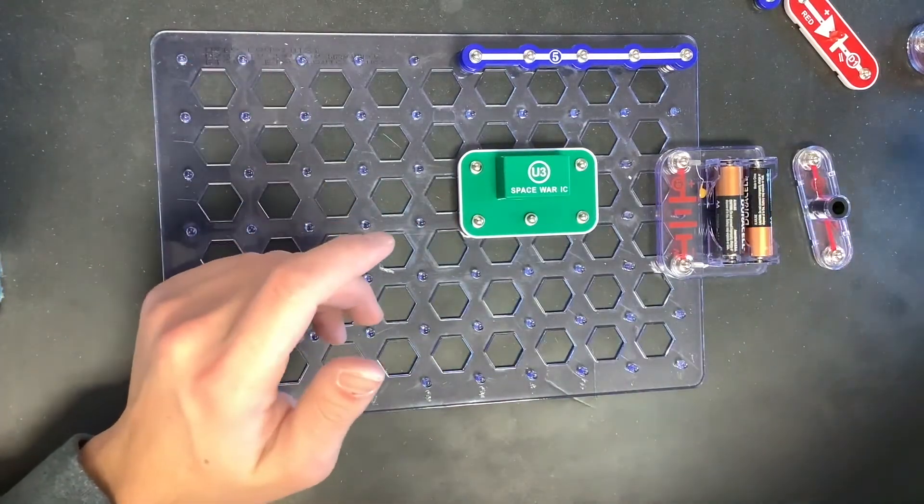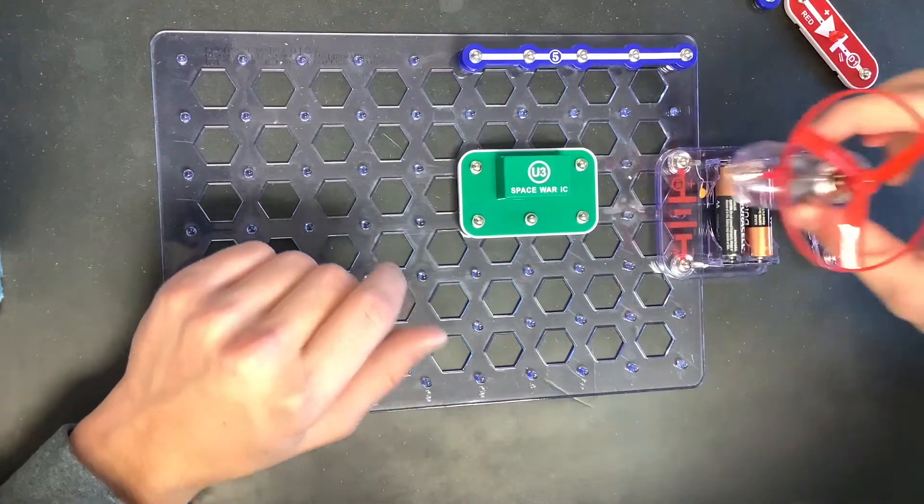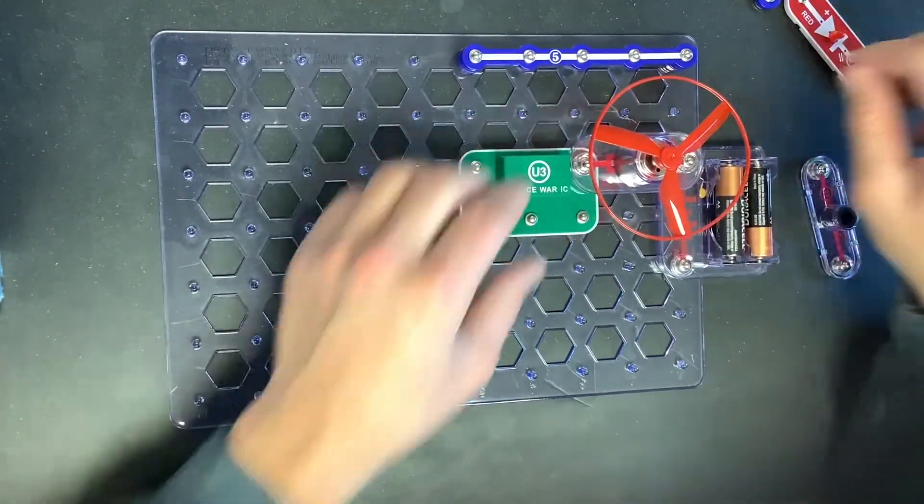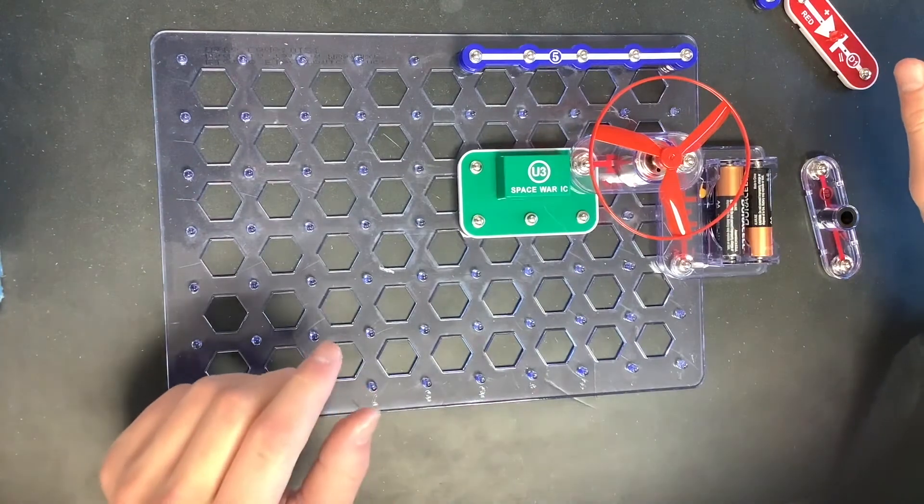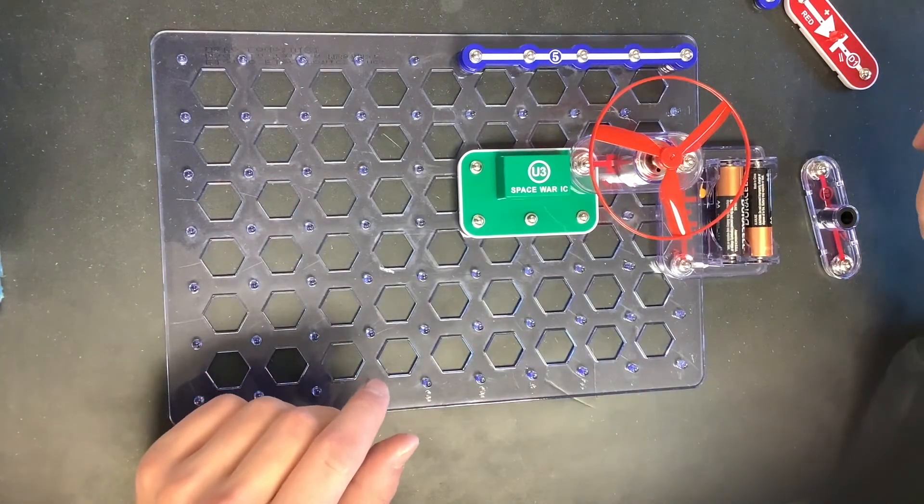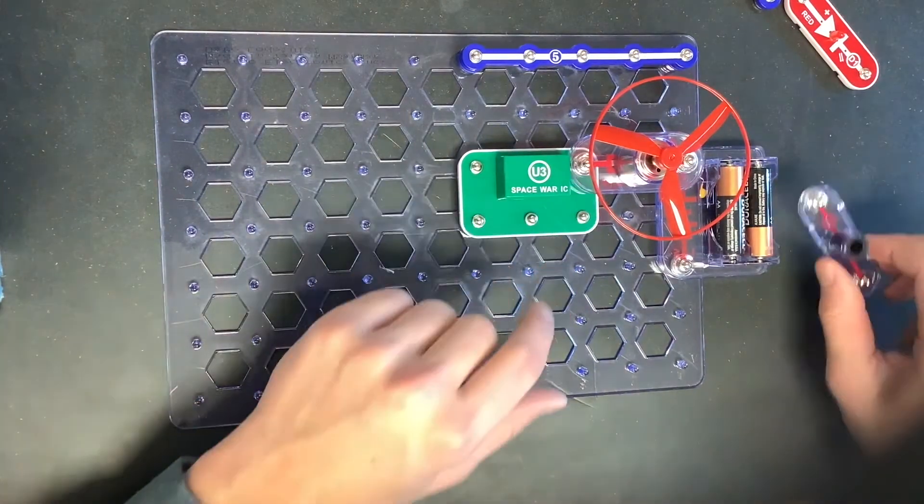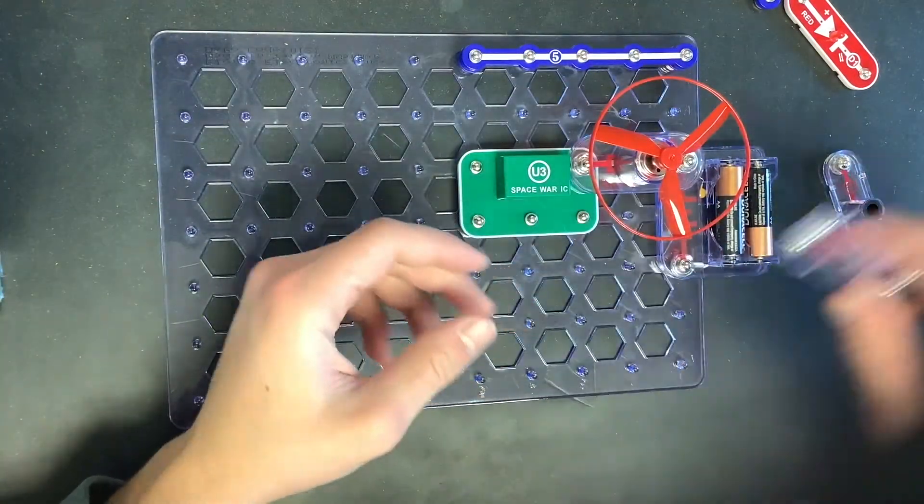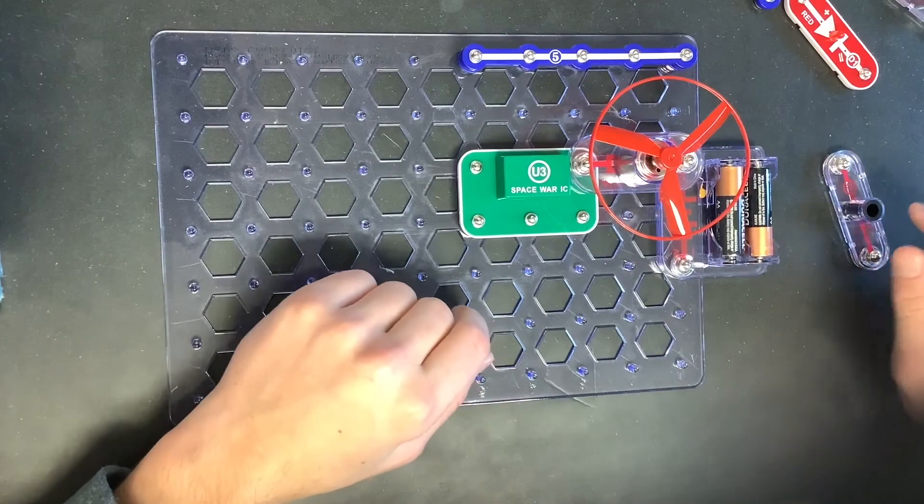It changes due to light. And then we're going to go ahead and put in our motor there. And if you were doing project number 251, you would just replace the motor with the 3-volt lamp.